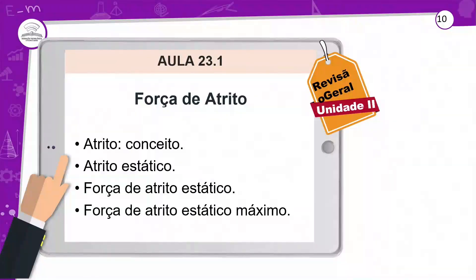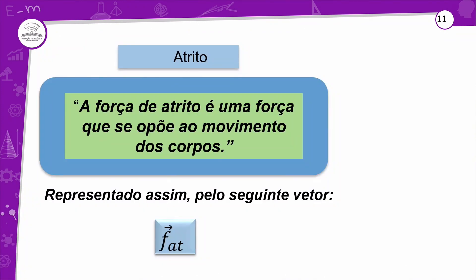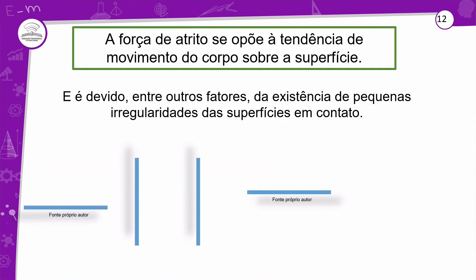Na aula 23.1 vimos o conceito do atrito, o atrito estático, força de atrito estático e força de atrito estático máximo. A força de atrito é uma força que se opõe ao movimento dos corpos — ela só existe enquanto tiver contato com os corpos e sempre se opõe ao movimento, nunca a favor. Todo tipo de força é vetorial: módulo, direção e sentido. A força de atrito se opõe à tendência de movimento do corpo sobre a superfície, e é devida à existência de pequenas irregularidades da superfície em contato — que mesmo a nível microscópico existem.